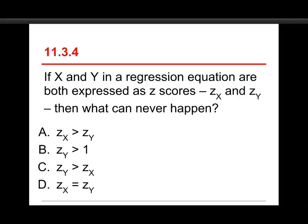And, I know it's confusing, not trying to be tricky, just trying to make it that you pay attention and think about what you're doing here. The answer is C, that Z sub Y can never be greater than Z sub X. And here's how that works. Now Z sub X can be greater than Z sub Y. Yeah, that's part of the regression to the mean equation.